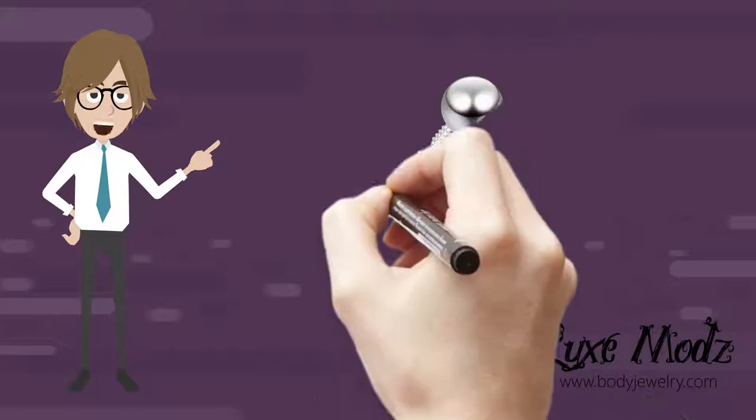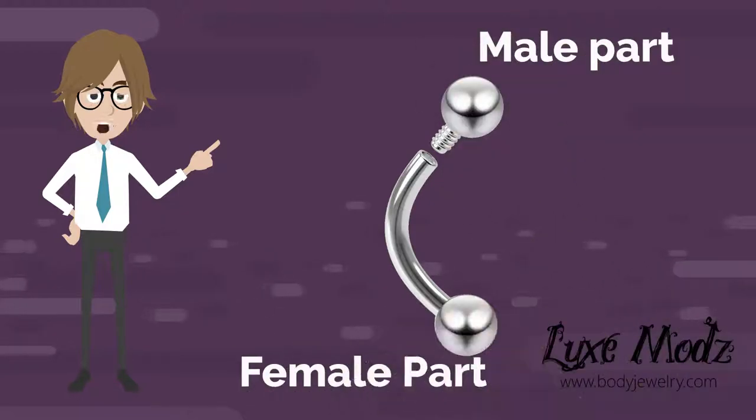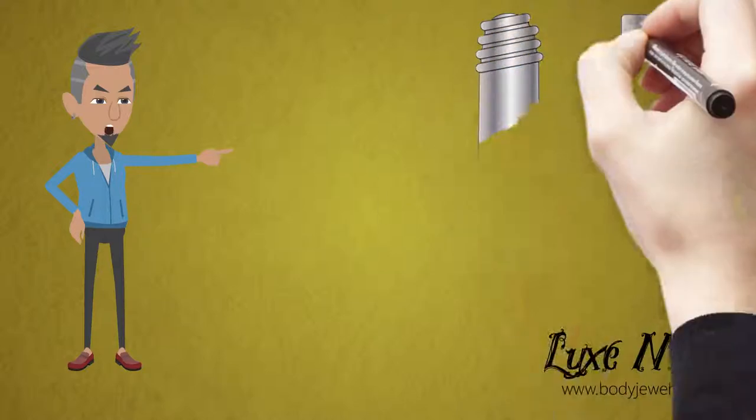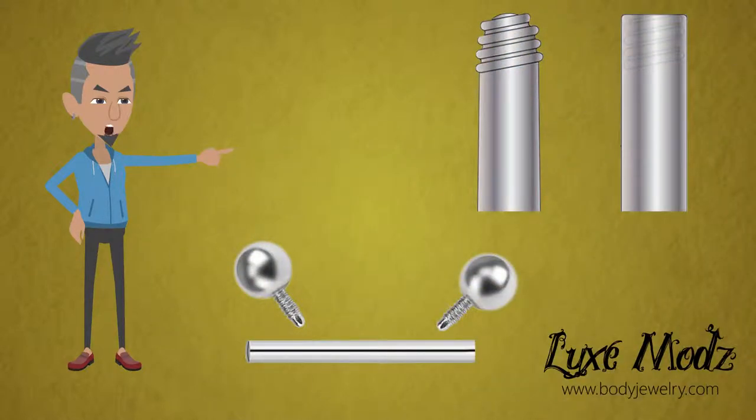Typically, the jewelry shaft and decorative end have a complementary male and female part that fits snugly together. The male part is the thread or screw, while the female part is designed to receive the male part. It is the positioning of the threaded part on either the shaft or decorative end that defines whether jewelry is internally or externally threaded.